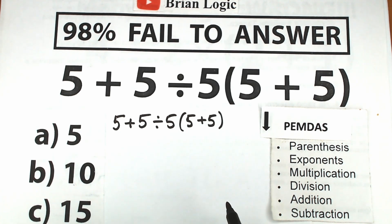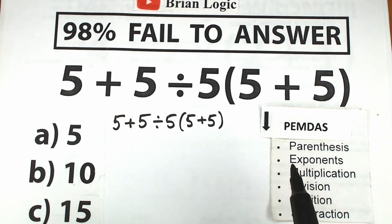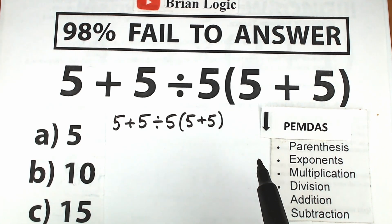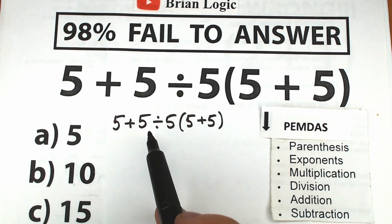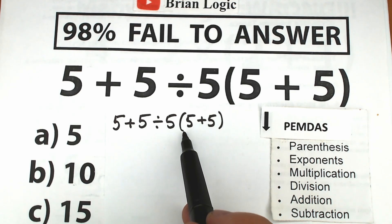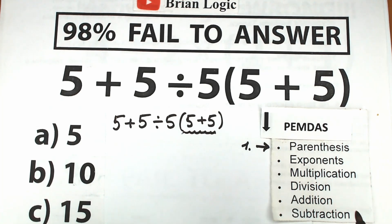Now let's scan what elements we have in our challenge, going from top to bottom step by step. First of all, we have parentheses. Let's find where the parentheses are in our challenge — right here we have parentheses. So first, we should evaluate the expression inside the parentheses. This is our first step.